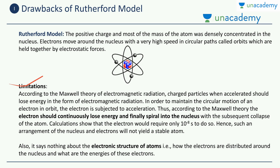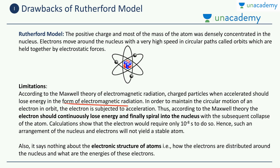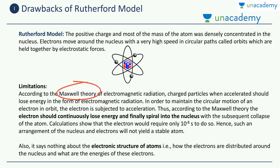What are the limitations of the Rutherford model? According to Maxwell's theory of electromagnetic radiation, charged particles when accelerated should lose energy in the form of electromagnetic radiation. In order to maintain the circular motion of an electron in orbit, the electron is subject to acceleration — because the direction of the electron is continuously changing, the electron is in acceleration at all times. According to Maxwell's theory, a charged particle like an electron which has acceleration should radiate energy and lose energy in the form of radiation.